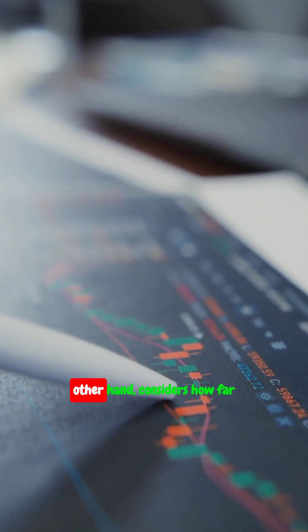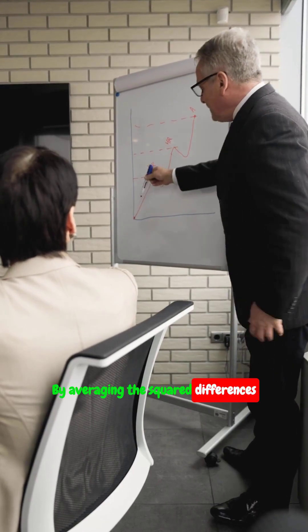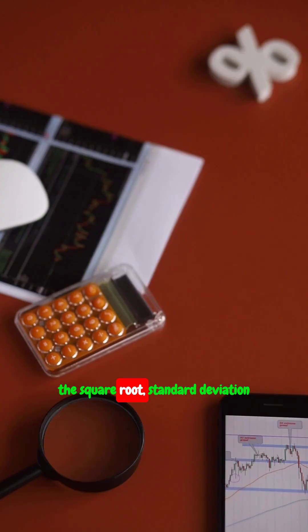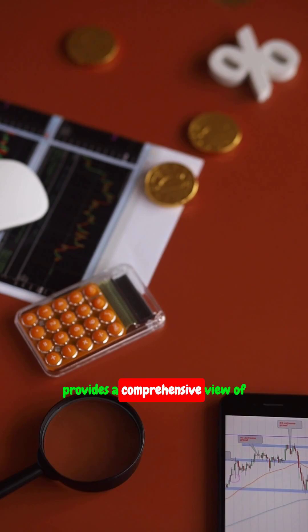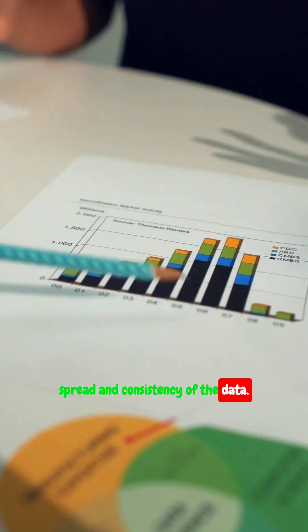Standard deviation, on the other hand, considers how far each data point is from the mean. By averaging the squared differences from the mean and then taking the square root, standard deviation provides a comprehensive view of variability, reflecting both the spread and consistency of the data.